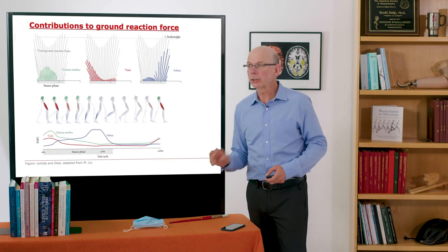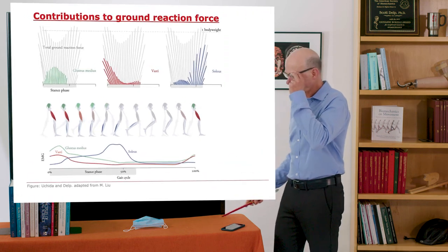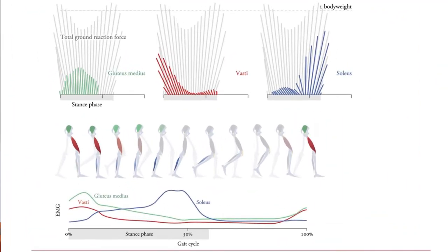Let's look at what they're contributing to ground reaction force. So what I'm plotting here is the total ground reaction force. There's one body weight here. Remember it goes a little above one body weight, a little below one body weight during stance. Remember that from chapter two.